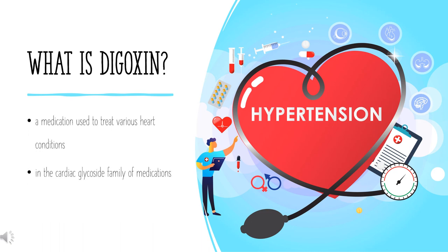Digoxin, sold under the brand name Lanoxin among others, is a medication used to treat various heart conditions. Most frequently it is used for atrial fibrillation, atrial flutter, and heart failure. Digoxin is one of the oldest medications used in the field of cardiology and is in the cardiac glycoside family of medications. It was first isolated in 1930 from the foxglove plant, Digitalis lanata, and is on the World Health Organization's list of essential medicines.